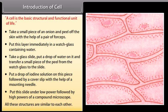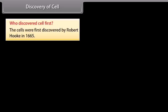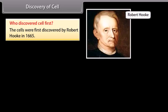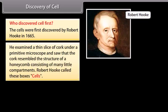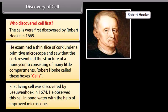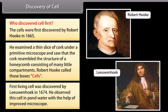Discovery of cell: Cells were first discovered by Robert Hooke in 1665. He examined a thin slice of cork under a primitive microscope and saw that the cork resembled the structure of a honeycomb consisting of many little compartments. Robert Hooke called these boxes cells. The first living cell was discovered by Leeuwenhoek in 1674, who observed this cell in pond water with the help of an improved microscope.